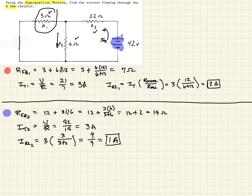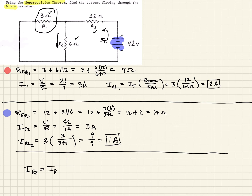In both cases, the current is flowing in the same direction — down through the resistor. So by superposition, IR2 equals IR2 from the first source plus IR2 from the second source: 2 amps plus 1 amp equals a total of 3 amps flowing through resistor R2.